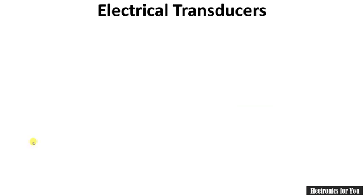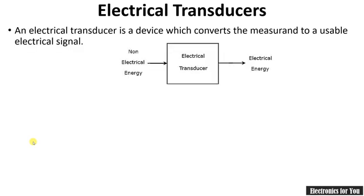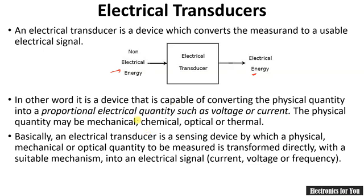To overcome these limitations, electrical transducers are used. Electrical transducers convert any non-electrical quantity into an electrical quantity. The inputs are non-electrical quantities such as temperature and pressure, and the output is electrical energy. The physical quantities may be mechanical, electrical, optical, or thermal, and the output will be an electrical signal.